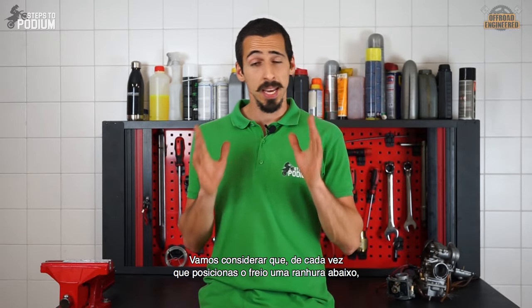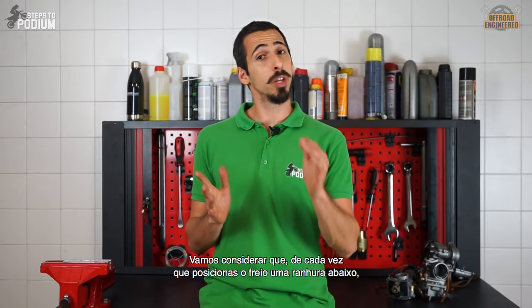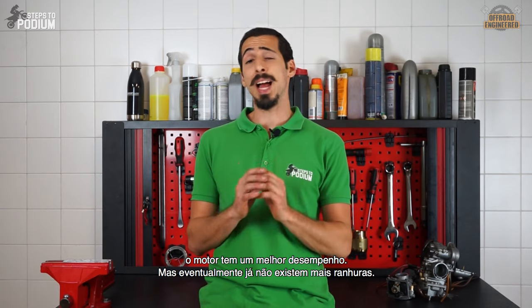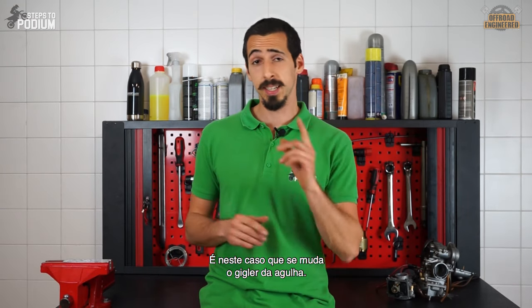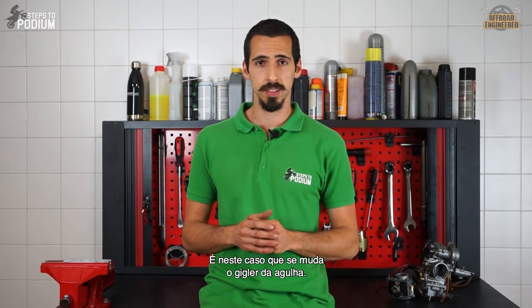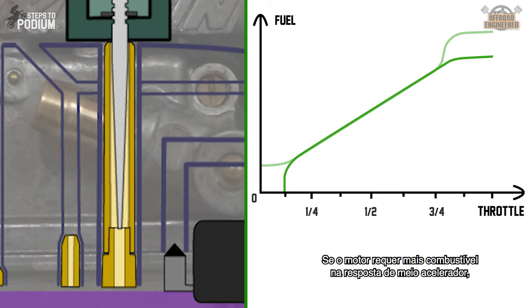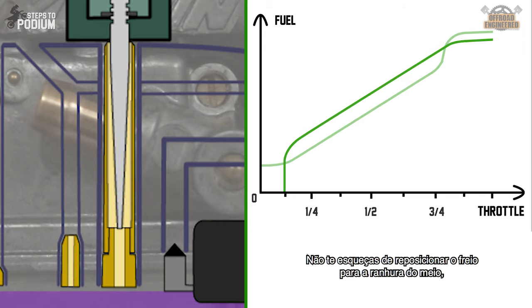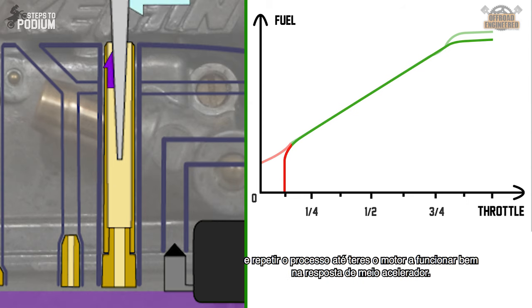But let's say that every time you place the circlip on a lower groove the engine performs better, but the needle has no more grooves left. This is where you change the needle jet. If the engine requires more fuel on mid throttle and on full throttle it runs just fine, just install a bigger needle jet. Don't forget to reset the needle circlip in the middle position and repeat the process until you have the engine running butter smooth on mid throttle.